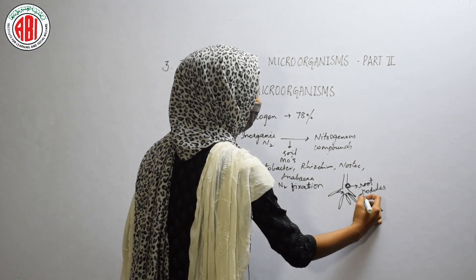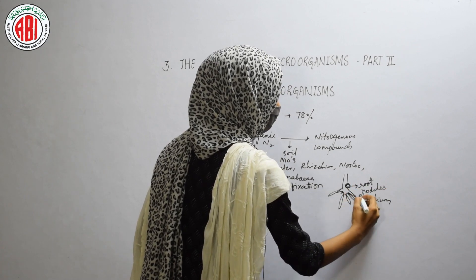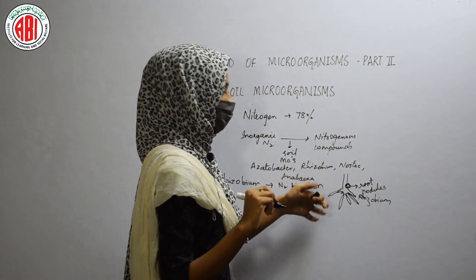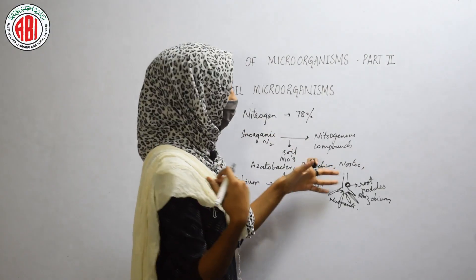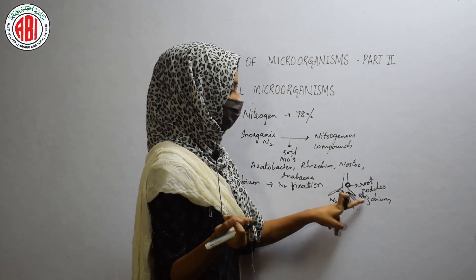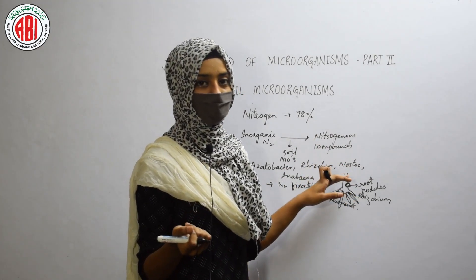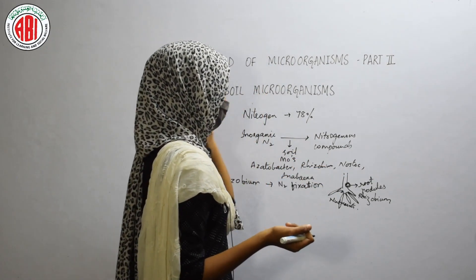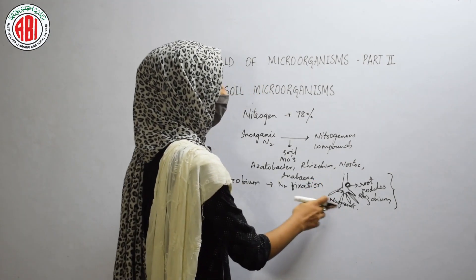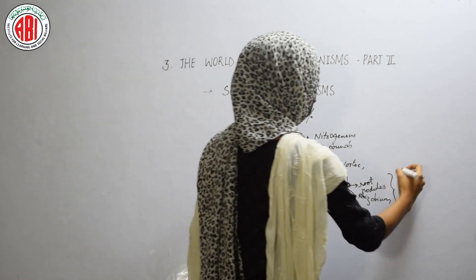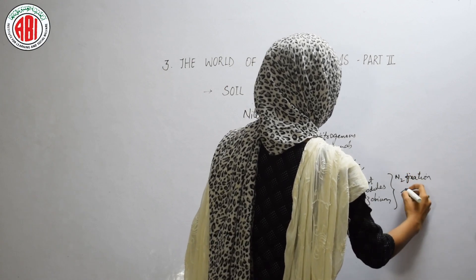In the root nodules, the Rhizobium bacteria are present. Rhizobium helps the leguminous roots to absorb nutrients from the soil, and the leguminous plant provides a space for the Rhizobium bacteria. In this way, they are both beneficial to each other and show a symbiotic association. Rhizobium helps the leguminous plant to fix nitrogen and is present in the root nodules of the leguminous plant.